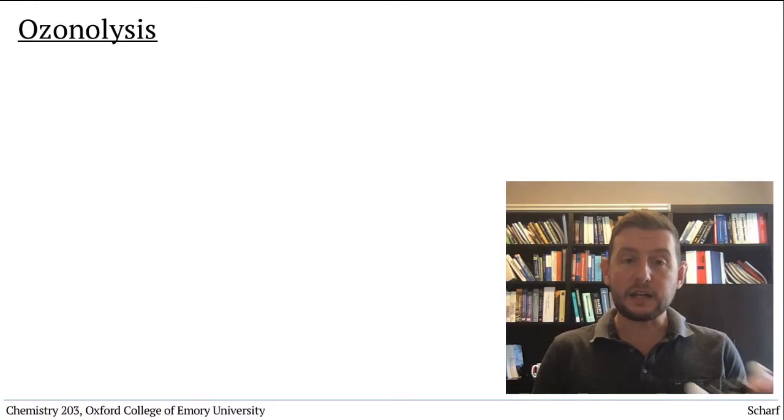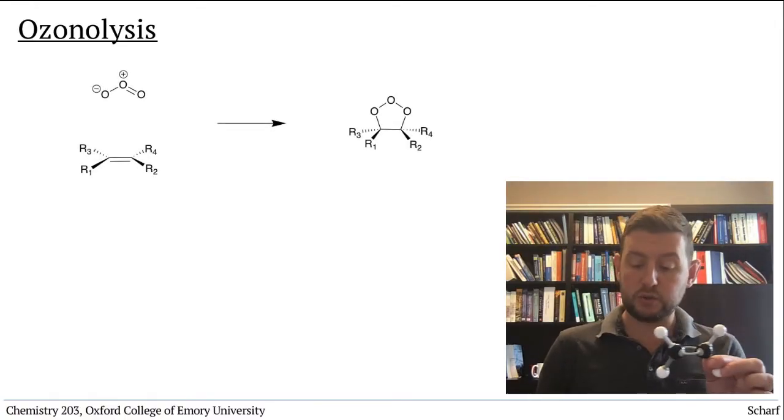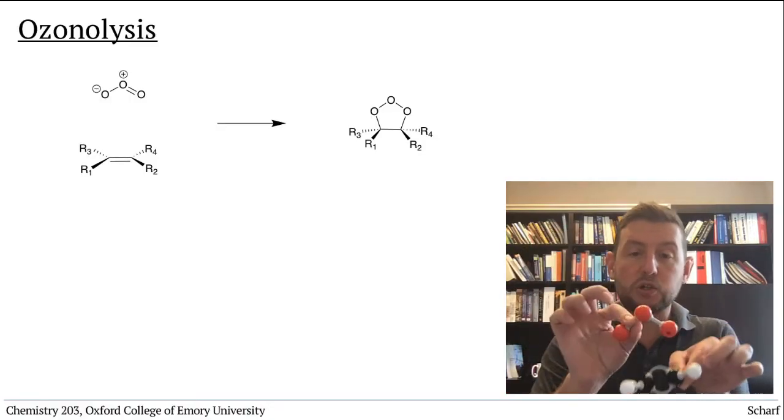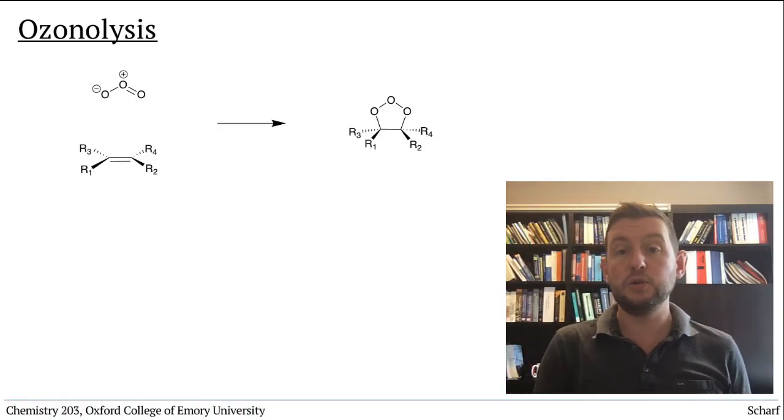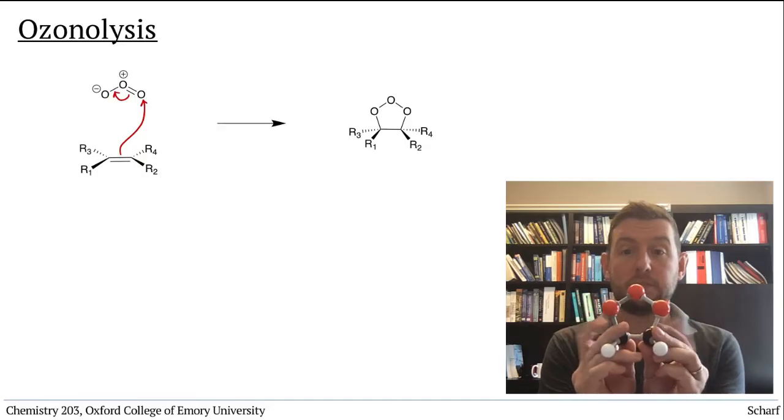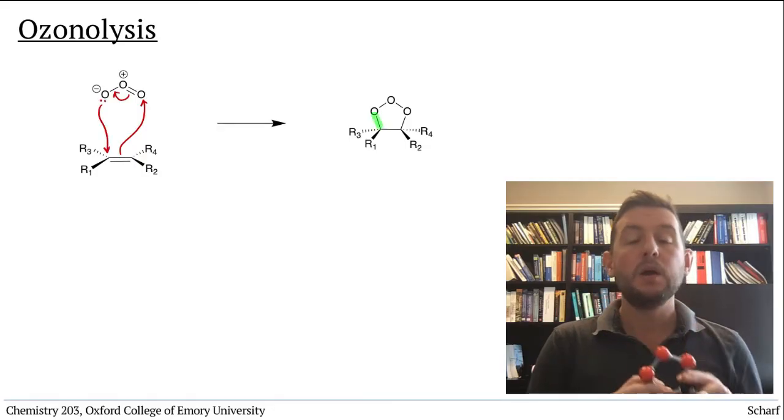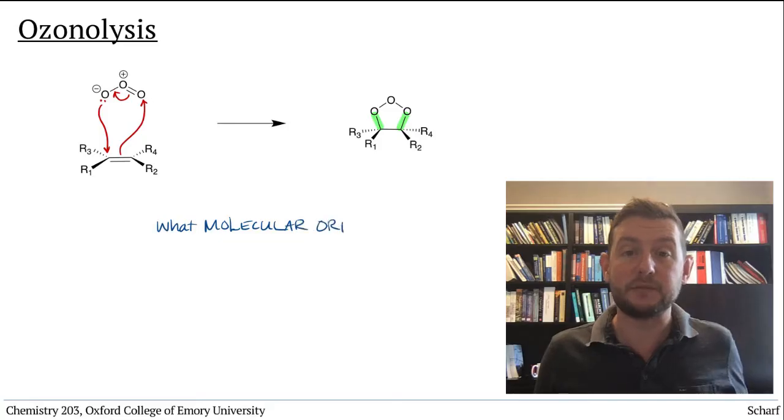You learned that alkenes react with ozone in a concerted fashion, making two new carbon-oxygen bonds like this. But what molecular orbitals are involved in this reaction?